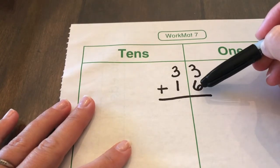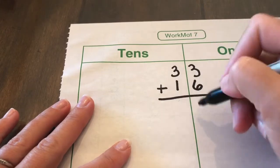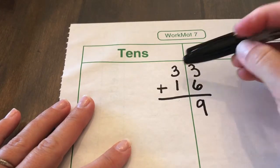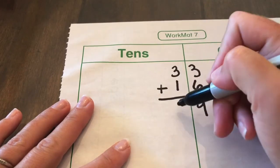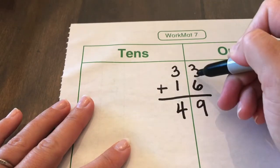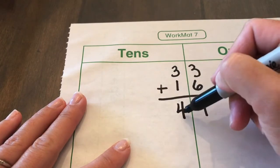So we're going to do 6 plus 3, which is 9, and then you're going to do 3 plus 1, which is 4. So 33 plus 16 is 49.